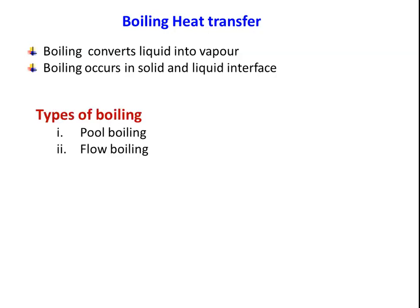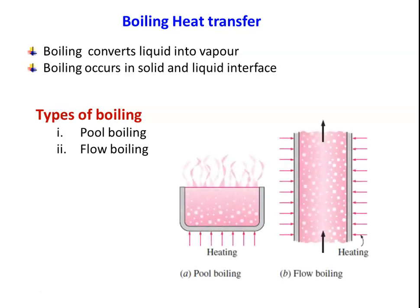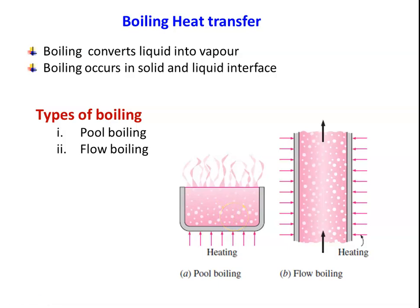There are two types of boiling. One is pool boiling, and another is flow boiling. The first diagram indicates pool boiling. In pool boiling, we have a vessel open to the atmosphere. Heat is supplied at the bottom. Heat is transferred from the inner surface of the vessel to the water. Vapour bubbles form on the metal surface, move upward, and are converted into vapour — this is pool boiling.